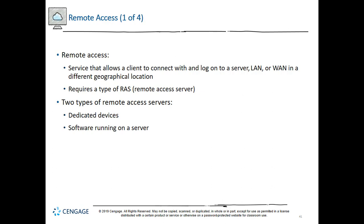As a remote user, you can connect to a network and its resources via remote access, which is a service that allows a client to connect with and log on to a server, LAN, or WAN in a different geographical location. After connecting, a remote client can access files, applications, and other shared resources such as printers. There are all types of remote access techniques that require a remote access server to attempt and grant privileges to the network's resources, with software installed on both remote client and server to negotiate and maintain the connection.